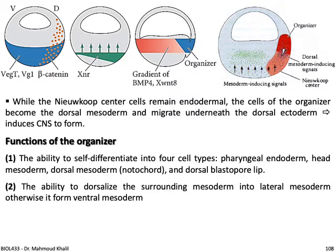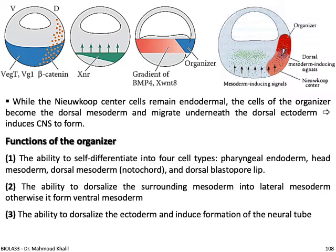The organizer has the ability to dorsalize the surrounding mesoderm into lateral mesoderm; otherwise it will form ventral mesoderm. It also has the ability to dorsalize the ectoderm, inducing the formation of the neural tube, and it has the ability to initiate the movement of gastrulation.